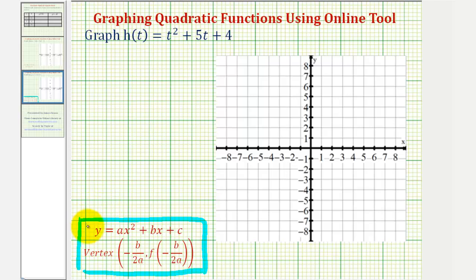When we have a quadratic function in this form, we can find the vertex using these formulas, where the x-coordinate is negative b divided by 2a. This also gives us the equation to the axis of symmetry, and then the y-coordinate is f of negative b divided by 2a.